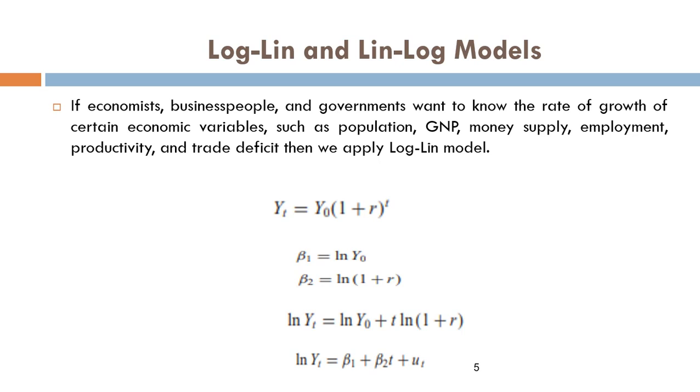This can be presented as: Yt equals Y0(1 + r)^t, where Yt is the dependent variable in a certain time period, and (1 + r)^t is the compounding of your time series. Beta 1 equals natural log of Y0, and beta 2 equals natural log of (1 + r).